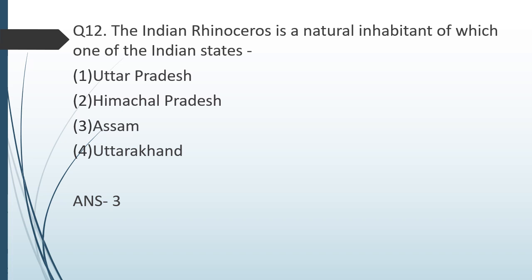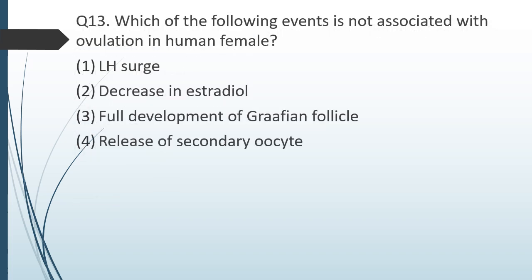Question number thirteen: which of the following events is not associated with ovulation in the human female — LH surge, decrease in estradiol, full development of Graafian follicle, or release of secondary oocyte? The correct answer is option two: decrease in estradiol is not associated with ovulation. Ovulation occurs on the 15th day when the secondary oocyte is released from the Graafian follicle. LH surge is required so the Graafian follicle ruptures. Options one, three, and four are all associated with ovulation; option two is not.